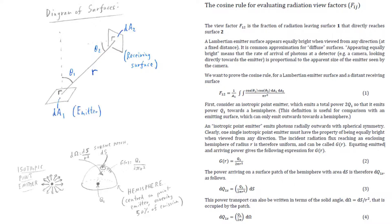A Lambertian surface has the property that it appears equally bright when viewed from any direction. It's a common approximation for diffuse surfaces. For example, a white piece of paper placed on a desk viewed from various different angles might look approximately equally bright from those angles. Appearing equally bright means that the rate of arrival of photons at a detector, like a camera looking directly towards the emitter, is proportional to the apparent size of the emitter seen by the camera — so the paper appears equally bright because the number of photons forming an image are proportional to its apparent area.